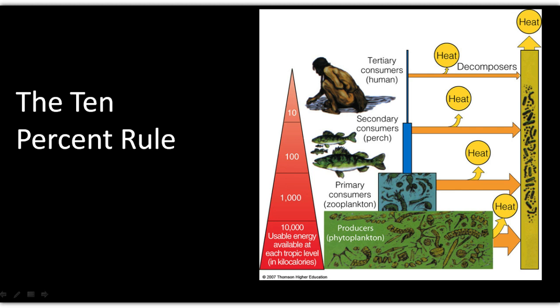If you look at the original amount of material available — call it 10,000, it's just a number — these initial producers are consumed by primary consumers, and then they are taken in by secondary consumers. Then of course we end up taking in the end result. Out of the available 10,000 energy units that were originally there, there's only 10. Very, very little of the energy that started is actually taken at the end.